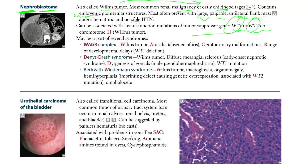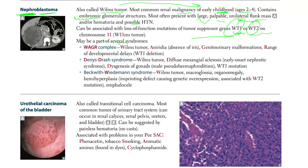Wilms tumor may be part of several syndromes. One is the WAGR complex, which includes Wilms tumor, aniridia (absence of the iris), genitourinary malformations, and a range of developmental delays. This is all due to WT1 deletions.